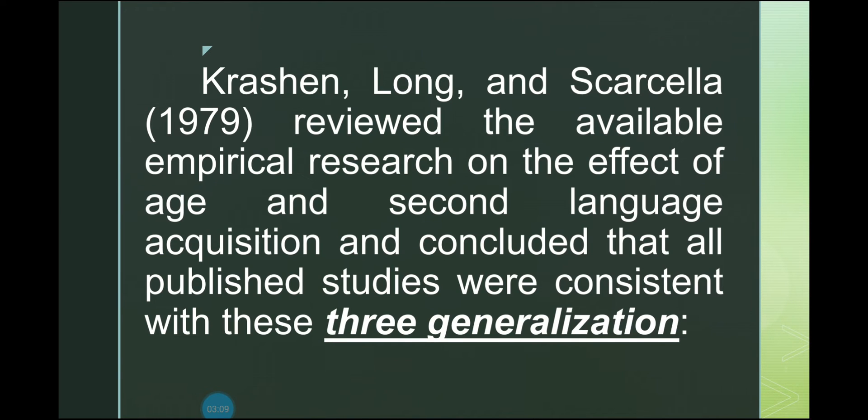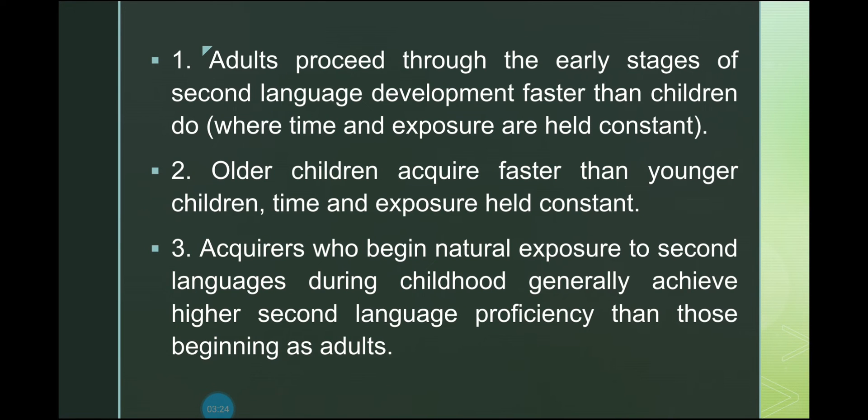Krashen, Long, and Scarcella from 1979 reviewed the available empirical research on the effect of age in second language acquisition and concluded that all published studies were consistent with three generalizations. First, adults proceed through the early stages of second language development faster than children do, where time and exposure are held constant. Second, older children acquire faster than younger children, time and exposure held constant.